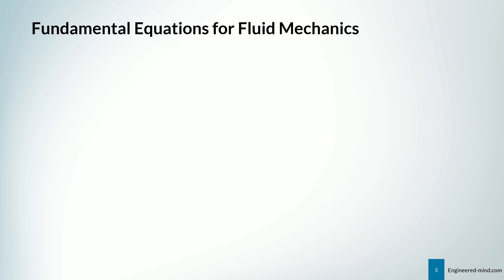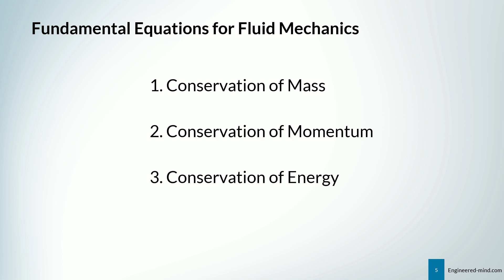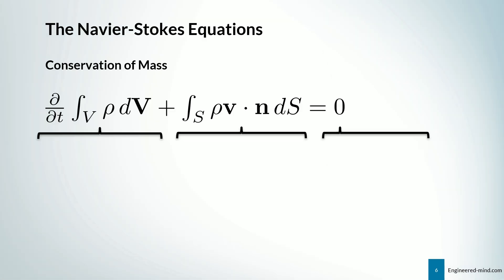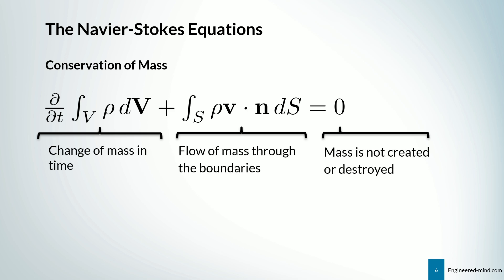The fundamental equations for fluid mechanics are as follows: we have the conservation of mass, which we will derive in this video; the conservation of momentum; and the conservation of energy. We don't look at the conservation of energy right now — that will be derived in a separate video — as will the conservation of momentum. But we will need the conservation of mass derivation to get a deeper understanding of how the Navier-Stokes equation is derived. As a recap, the conservation of mass has a first term representing the change of mass in time, then the flow of mass through the boundaries, which equals zero as mass is not created or destroyed.